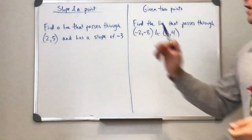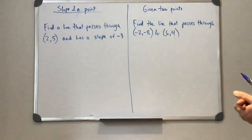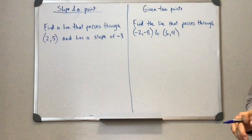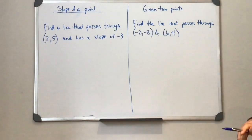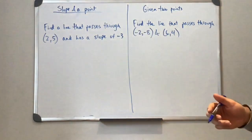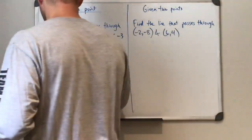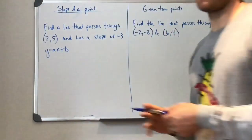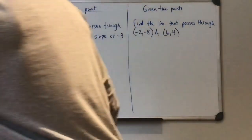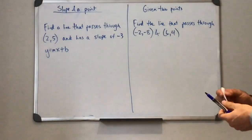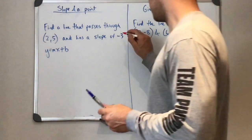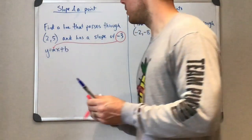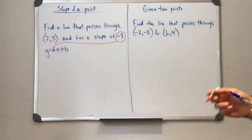So we started off, I think this is 4.5 maybe, or 5.5. Find a line that passes through a point (2,5) and has a slope of negative 3. Okay, so what I'm immediately going to do is write out our y equals mx plus b equation. And there's some pieces of information that we already know.